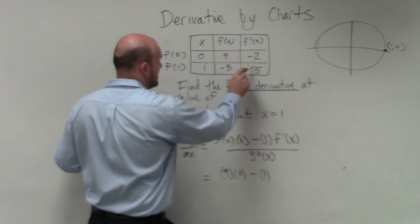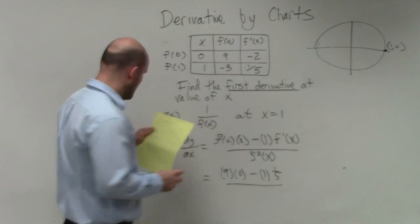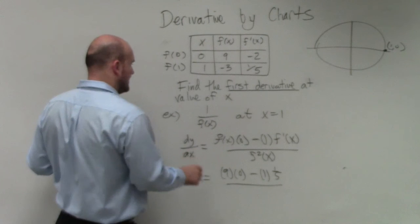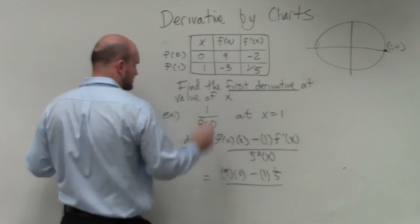Times f prime of x at 1 is 1 fifth. And then that's going to be divided by f of x at 1, which is negative 3 squared.